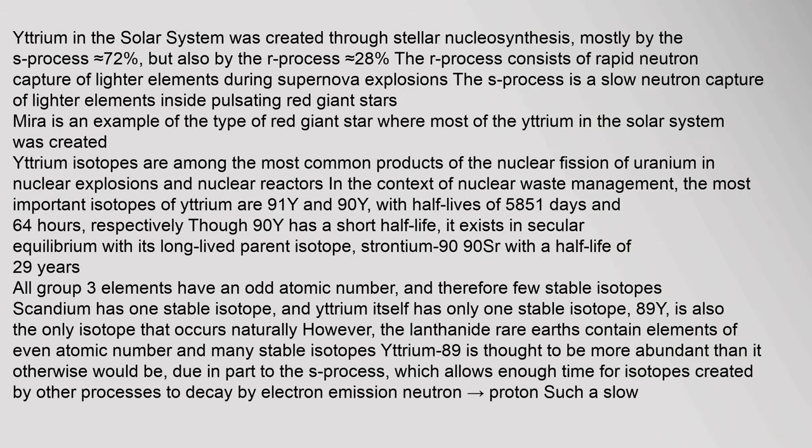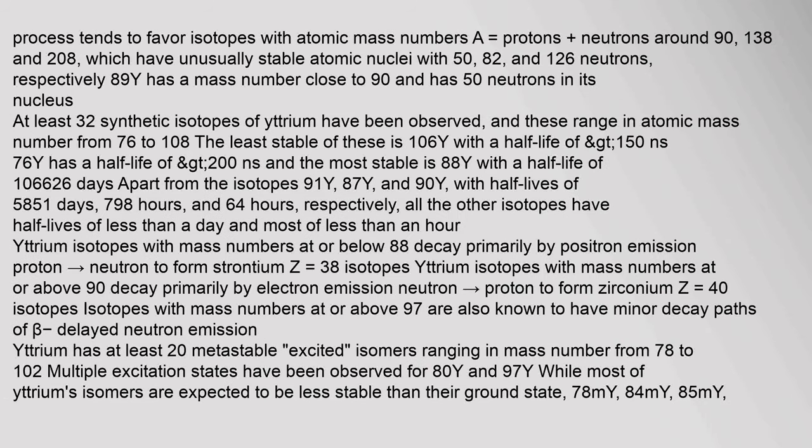Yttrium in the solar system was created through stellar nucleosynthesis, mostly by the S process (approximately 72%), but also by the R process (approximately 28%). The R process consists of rapid neutron capture of lighter elements during supernova explosions. The S process is a slow neutron capture of lighter elements inside pulsating red giant stars; MIRA is an example of the type of red giant star where most of the yttrium in the solar system was created. Yttrium isotopes are among the most common products of nuclear fission of uranium in nuclear explosions and nuclear reactors. The most important isotopes of yttrium are 91Y and 90Y, with half-lives of 58.51 days. The S process tends to favor isotopes with atomic mass numbers around 90, 138 and 208, which have unusually stable atomic nuclei with 50, 82, and 126 neutrons respectively. 89Y has a mass number close to 90 and has 50 neutrons in its nucleus.